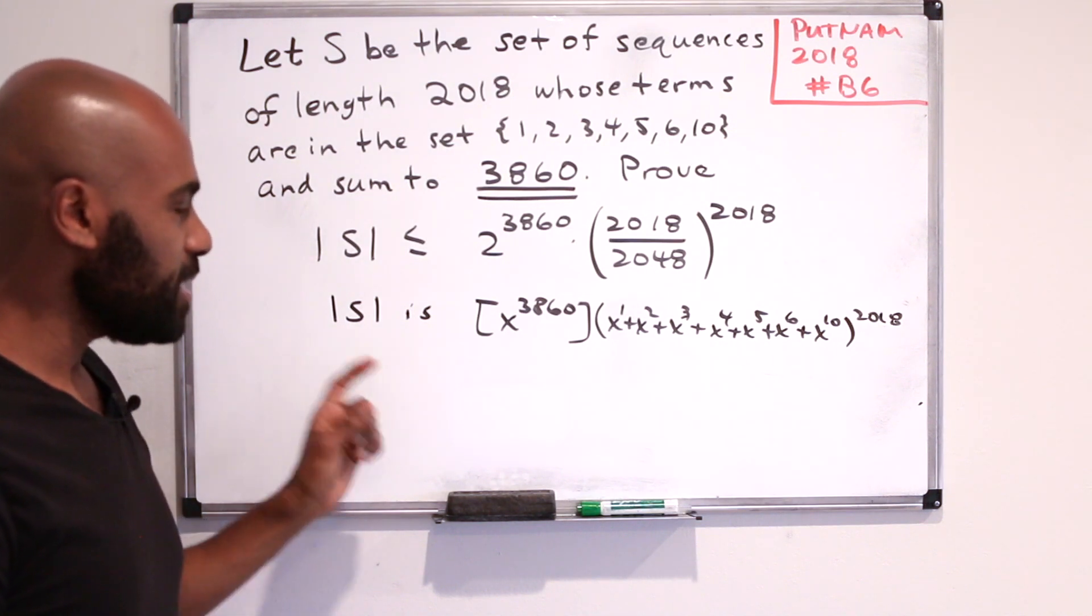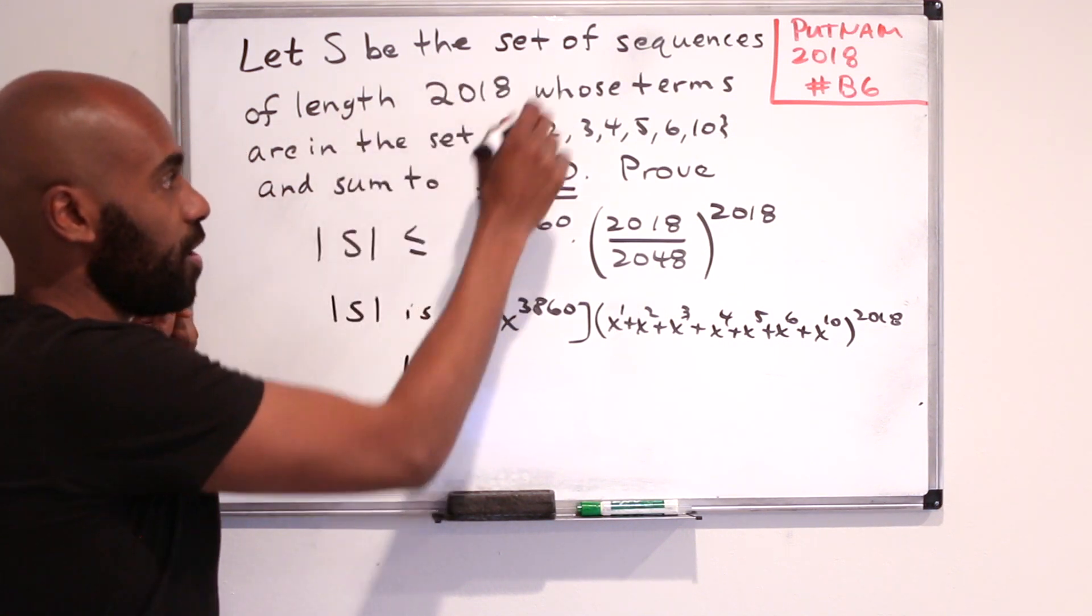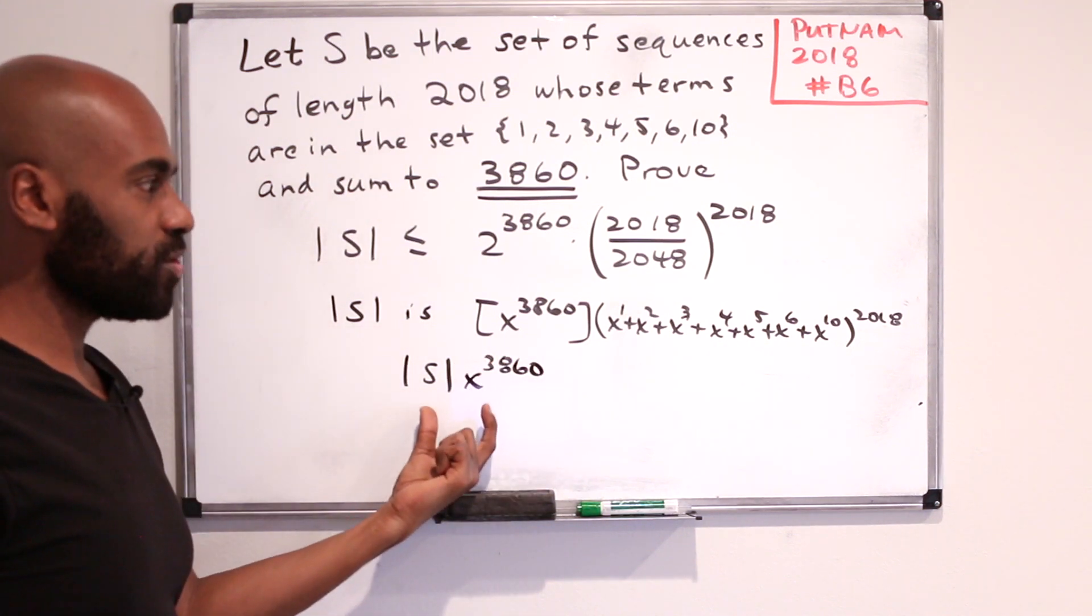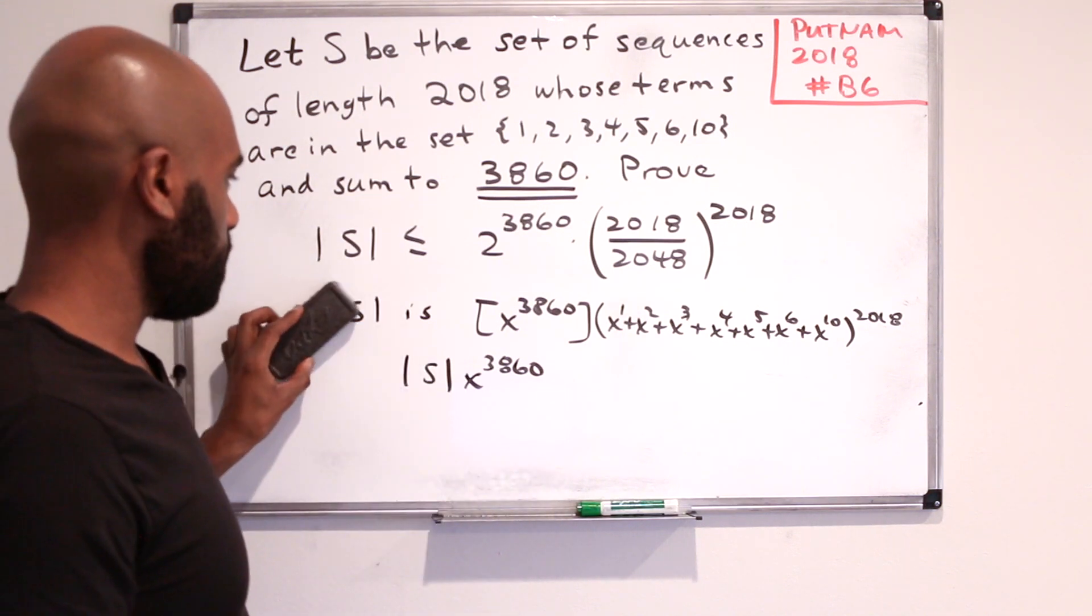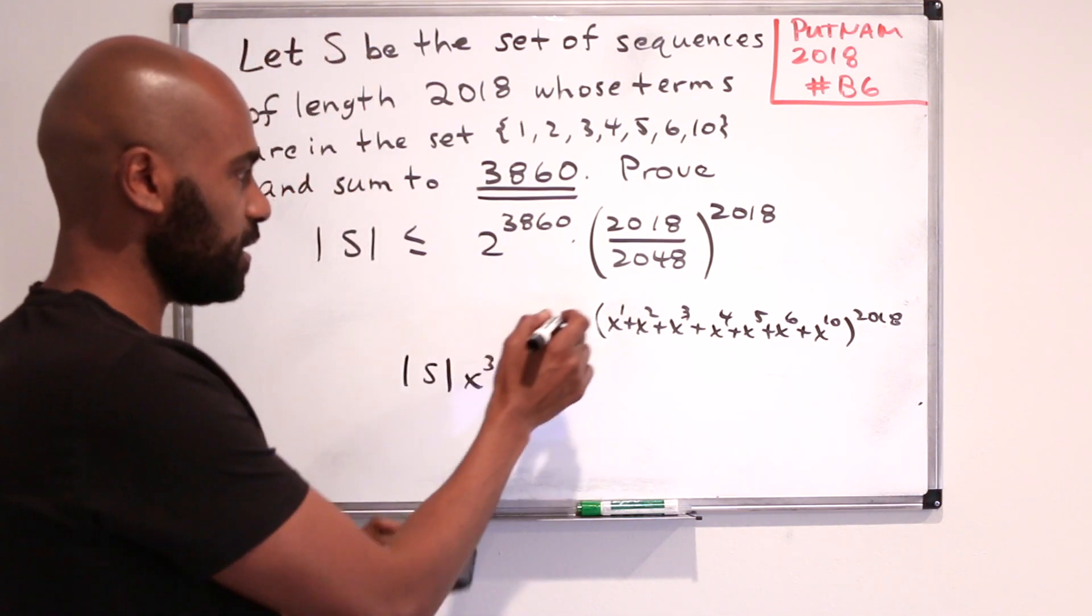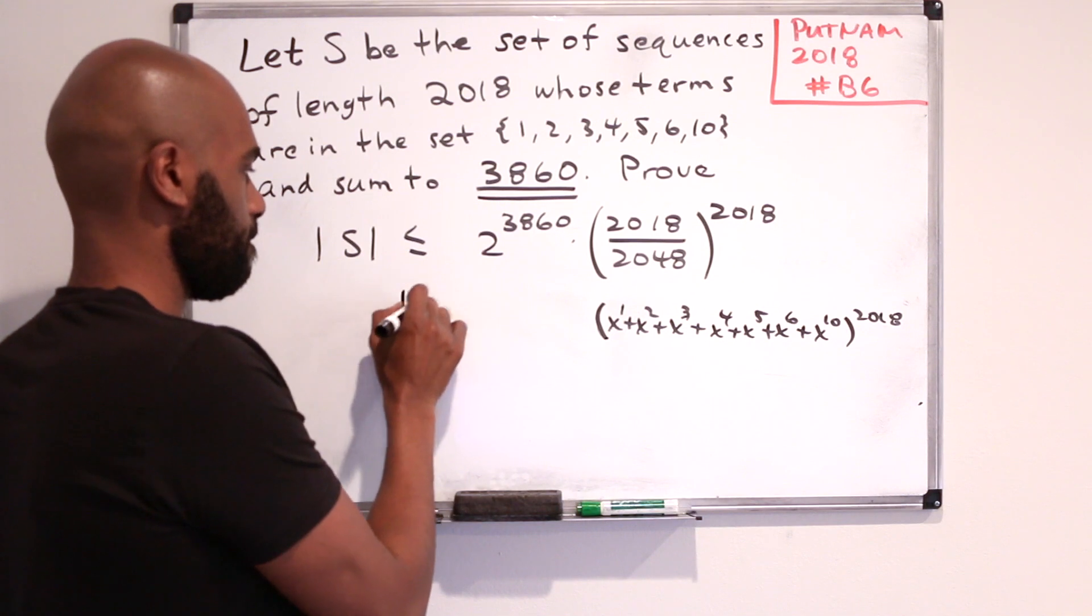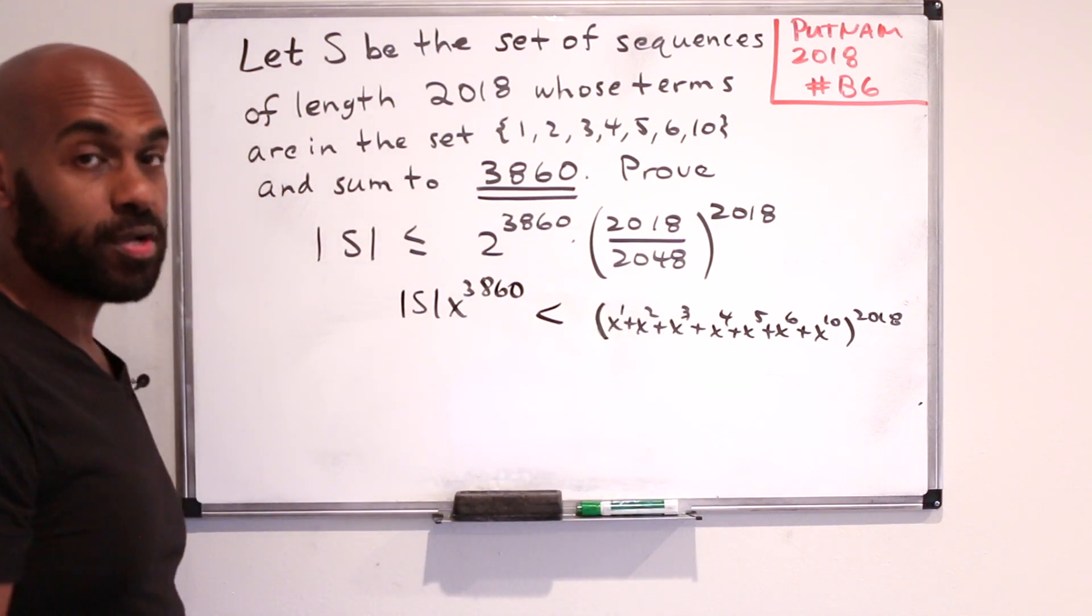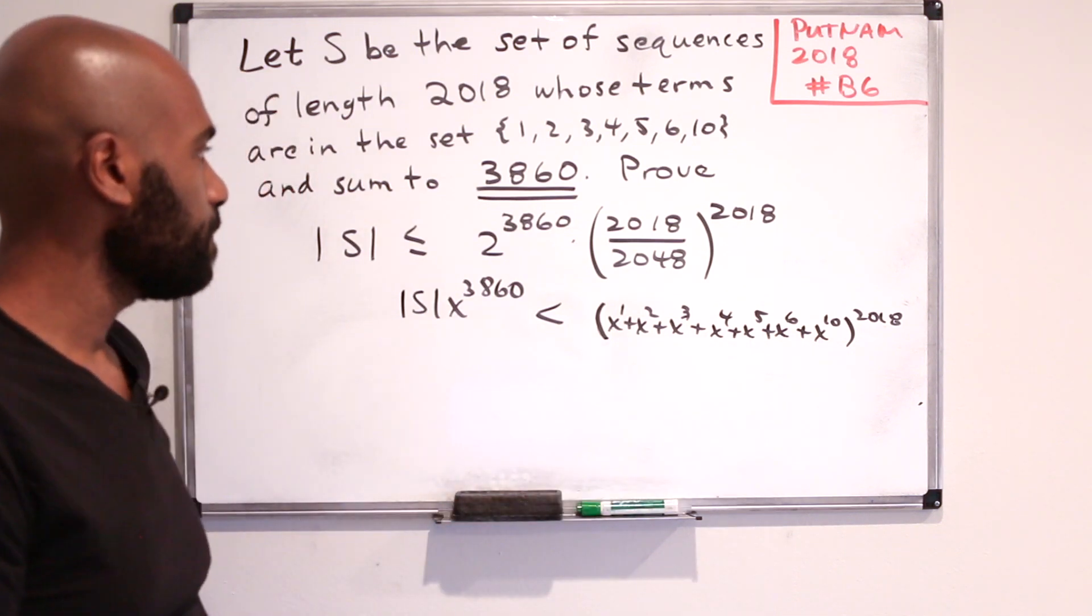So what that means then, is this term, the size of our set x to the 3860, appears as one of the terms in the expansion of this thing. So anytime x is a particular positive number, this quantity right over here is actually less than this quantity over here. Because when we expand this, this is one of the terms, and when we expand this, all of the terms are positive.